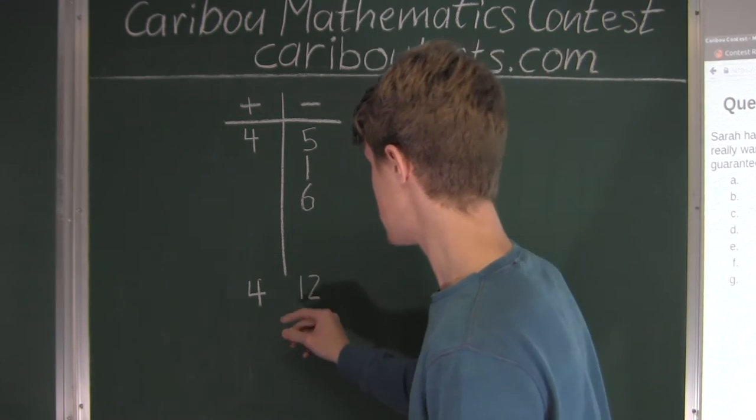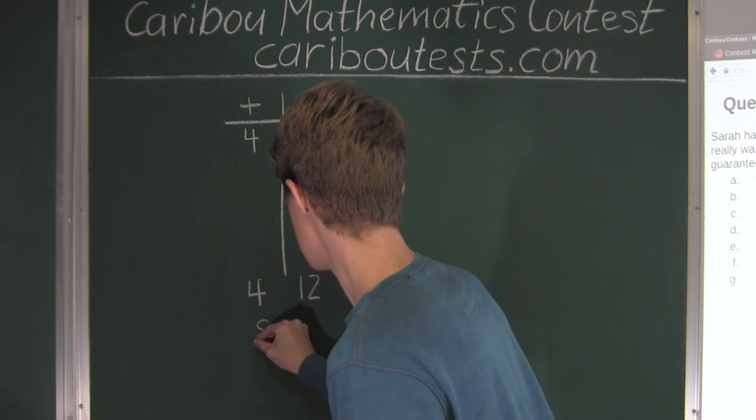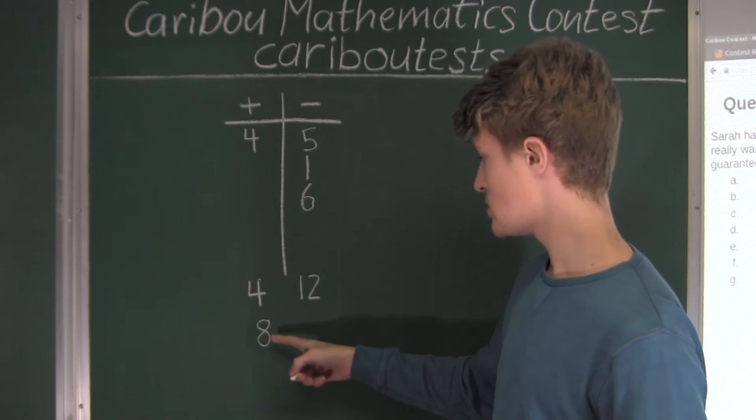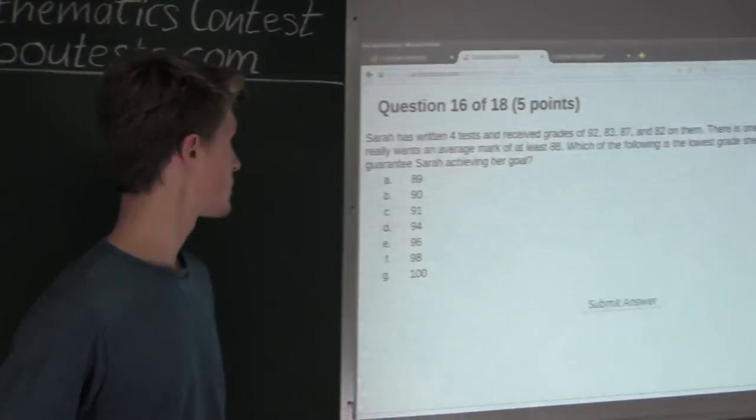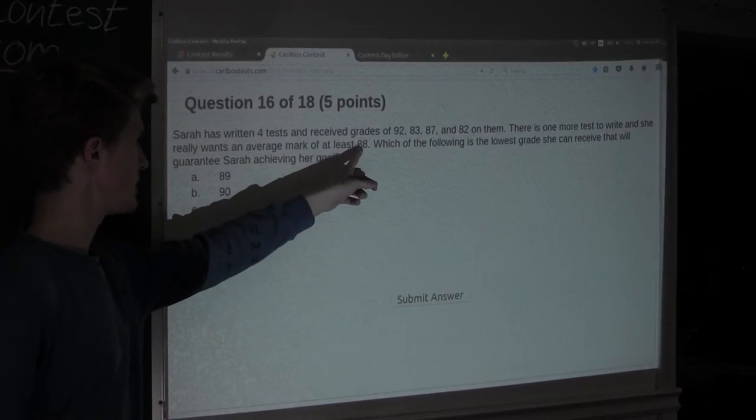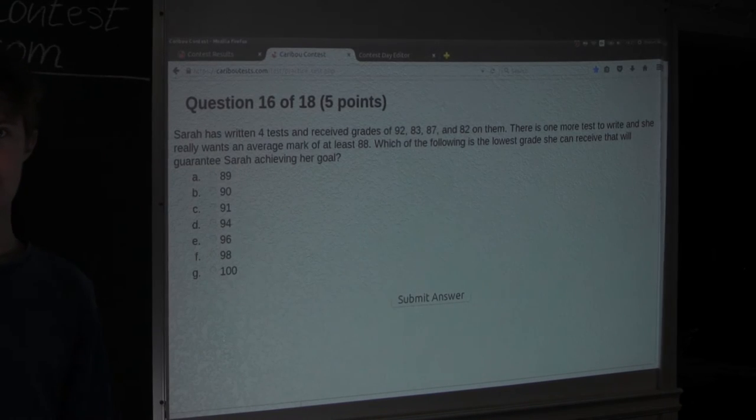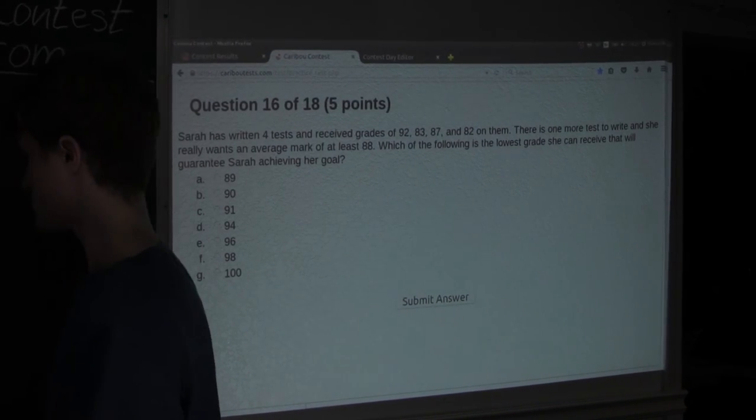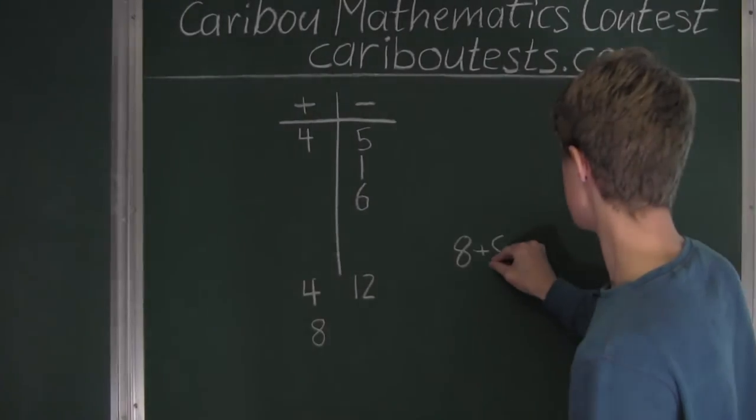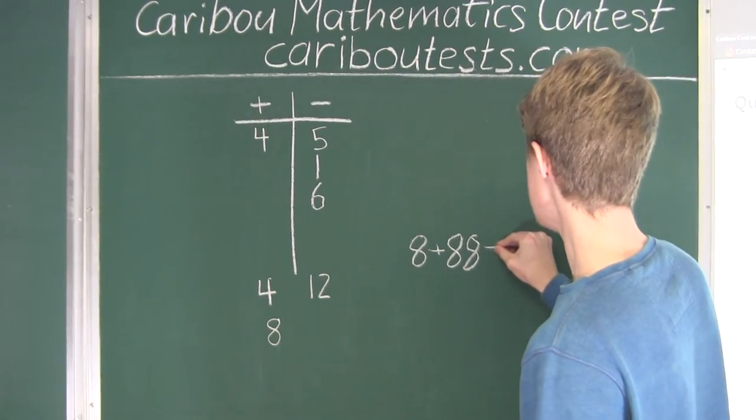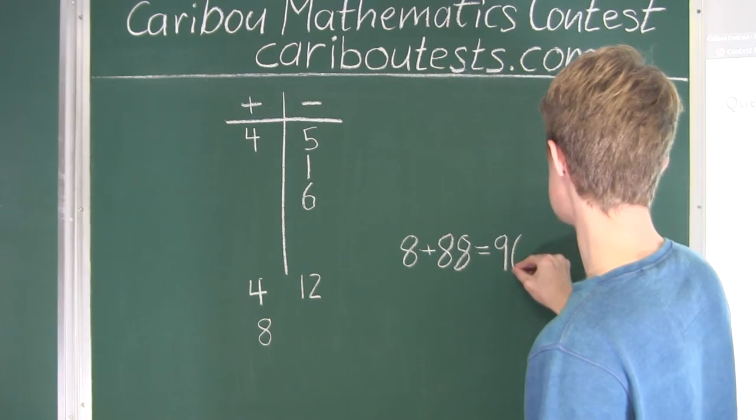12 minus 4, we have 8. That means she must get 8 more than her intended average. So 8 more than her intended average of 88 on that 5th test. We have 8 plus 88, and that equals 96.